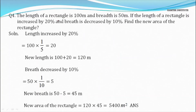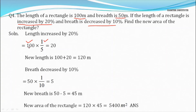Question 4: The length of a rectangle is 100 m and the breadth is 50 m. The length is increased by 20% and the breadth is decreased by 10%. Find the new area. The length is 100 m with a 20% increase. 20% equals 1/5, so the increase = 100 × 1/5 = 20 m. New length = 100 + 20 = 120 m.